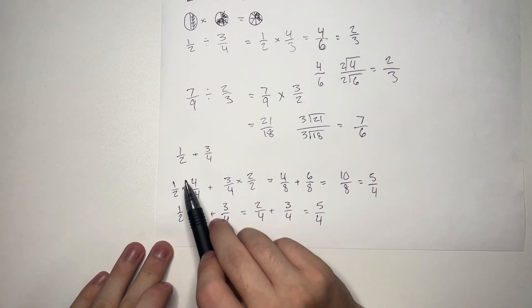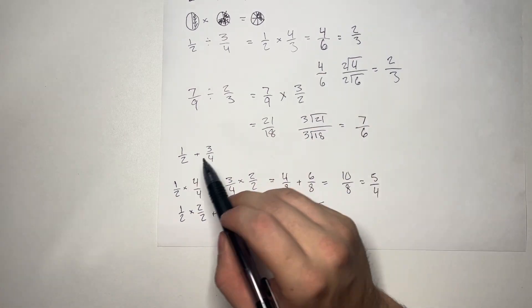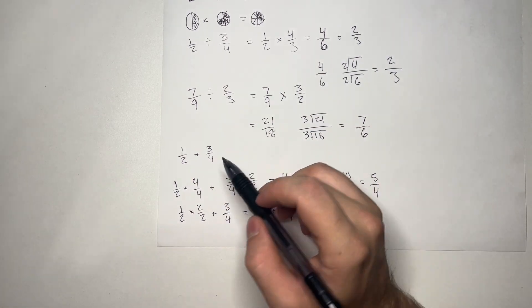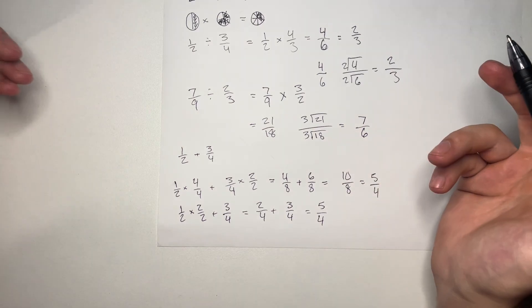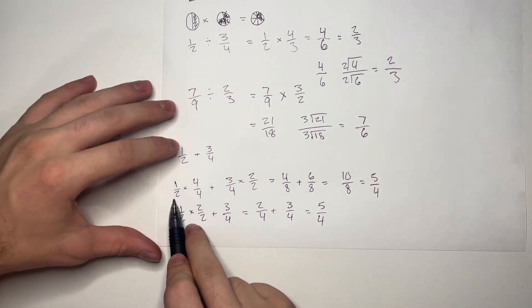Sometimes, you'll get lucky. And you'll see that all you need to do is multiply one side to be equal to the other side. However, sometimes, you will have to do the longer method here.